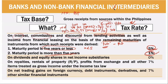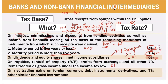For banks: if gross income is interest, commission, or discount — 5 years or less remaining maturity: 5%; more than 5 years: 1%. Dividends and equity shares in net income of subsidiaries (intercorporate dividends) are taxed at 0% since they are generally not subject to tax under final taxes. Royalties, rentals of property, profits from exchange, gains from foreign currency, debt instruments, derivatives, and all other items of gross income under the income tax law are taxed at 7%.